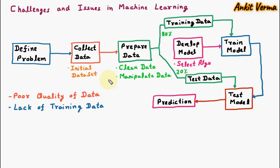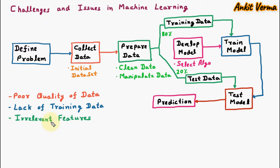The next challenge in machine learning is lack of training data. We know that the data is of poor quality, out of which we prepare the data and select the training data. This training data is very limited, which is used to train the model. Because of the shortage of training data, we are not able to properly train the model. This is a challenge in machine learning.